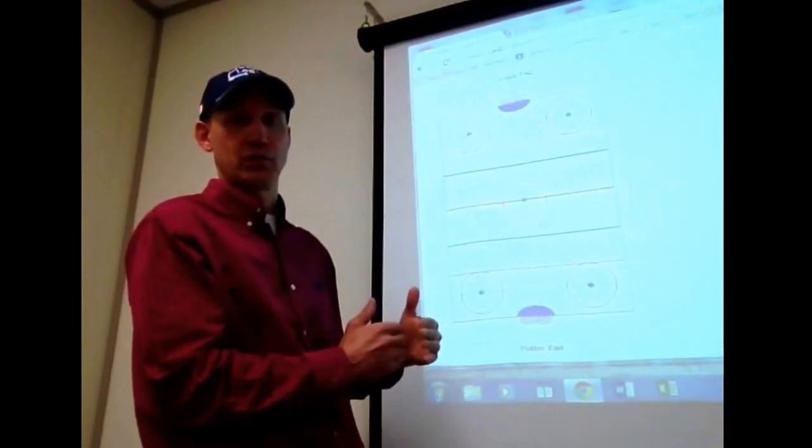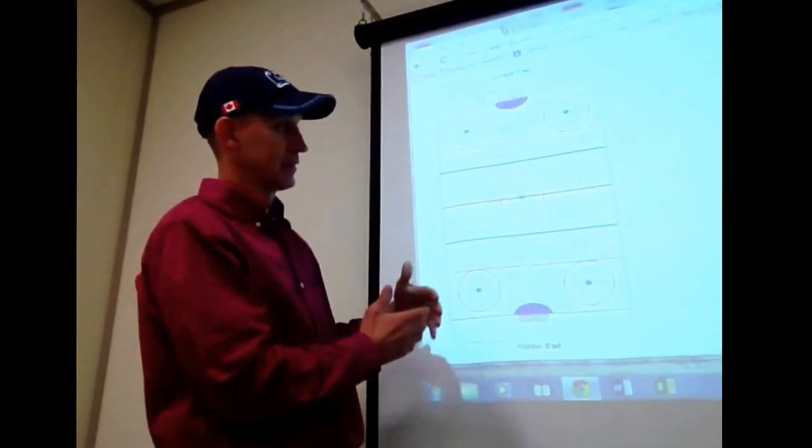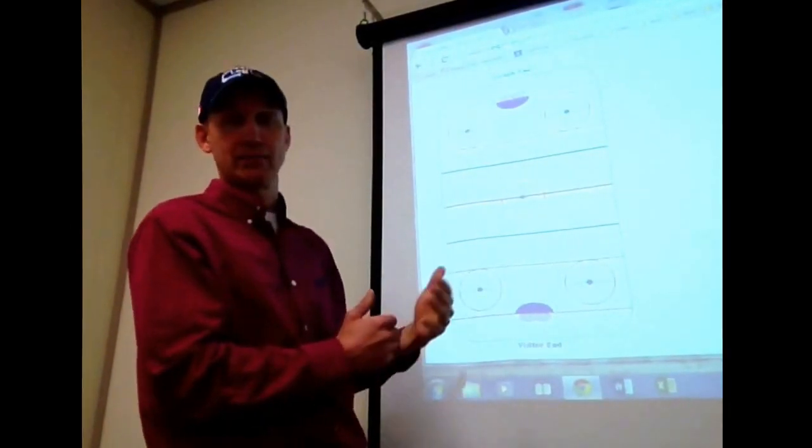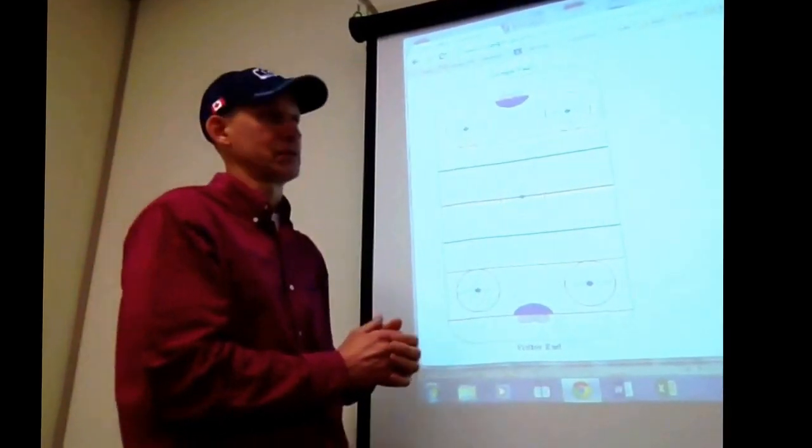So typically, if you have control of the ring in one of the zones, you're going to be trying to advance it over the blue line and try and get it to one of your team's players so that you can maintain possession of the ring.